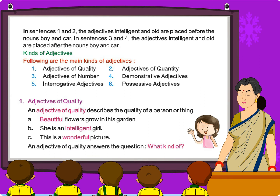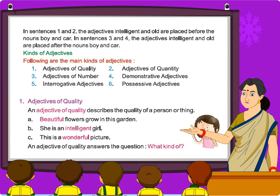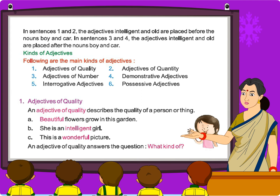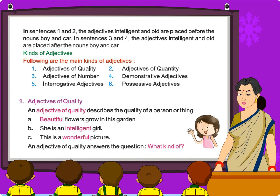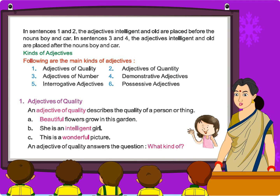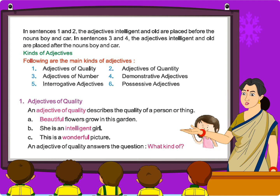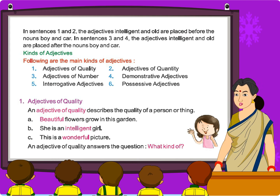Kinds of Adjectives. Following are the main kinds of adjectives: adjectives of quality, adjectives of quantity, adjectives of number. Adjectives of quality describe the quality of a person or thing. For example: 'Beautiful flowers grow in this garden.' 'She is an intelligent girl.' 'This is a wonderful picture.' An adjective of quality answers the question: What kind of?